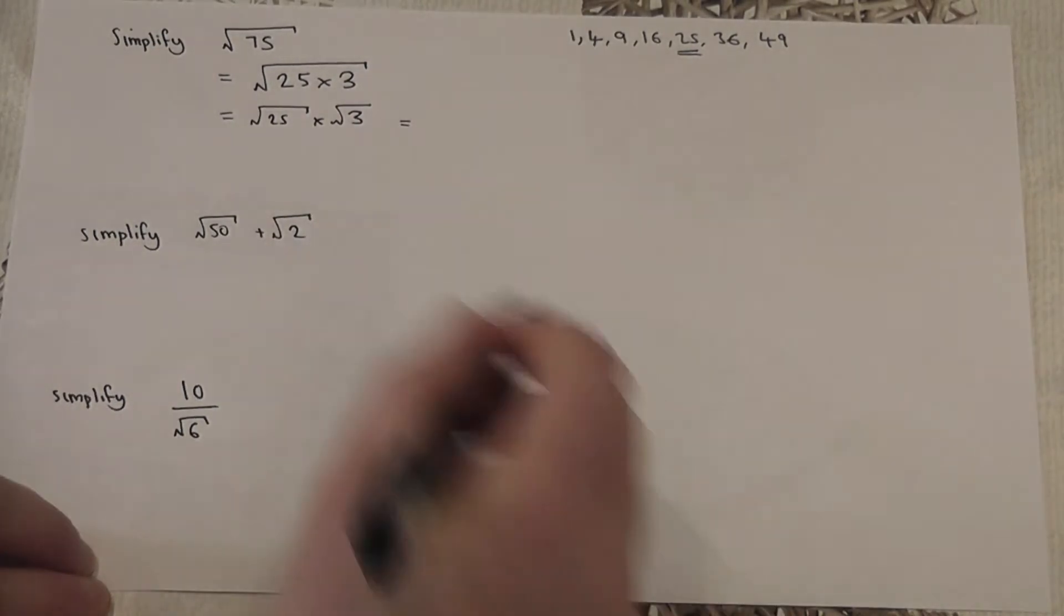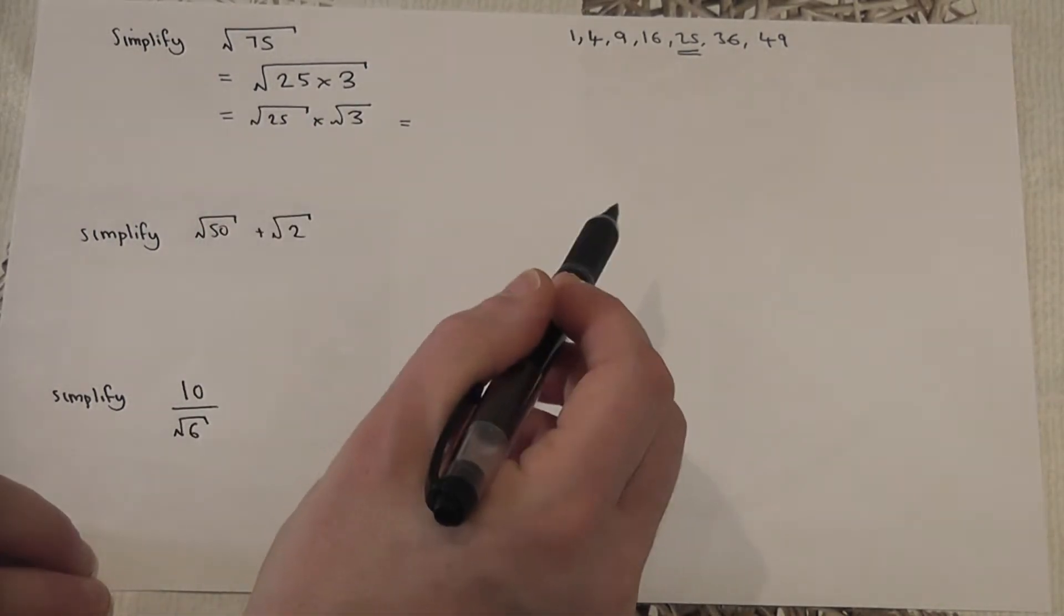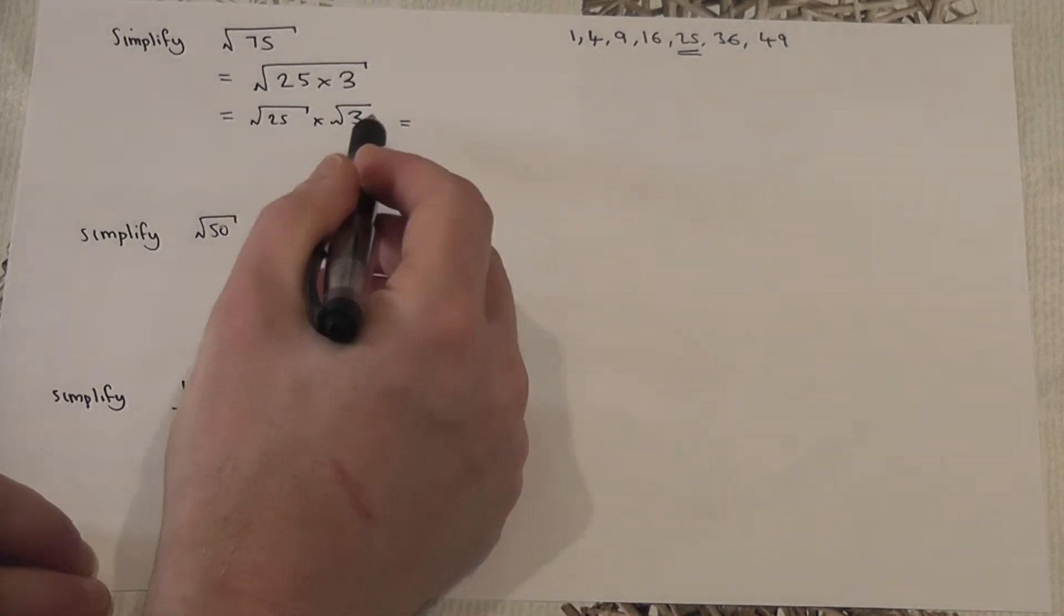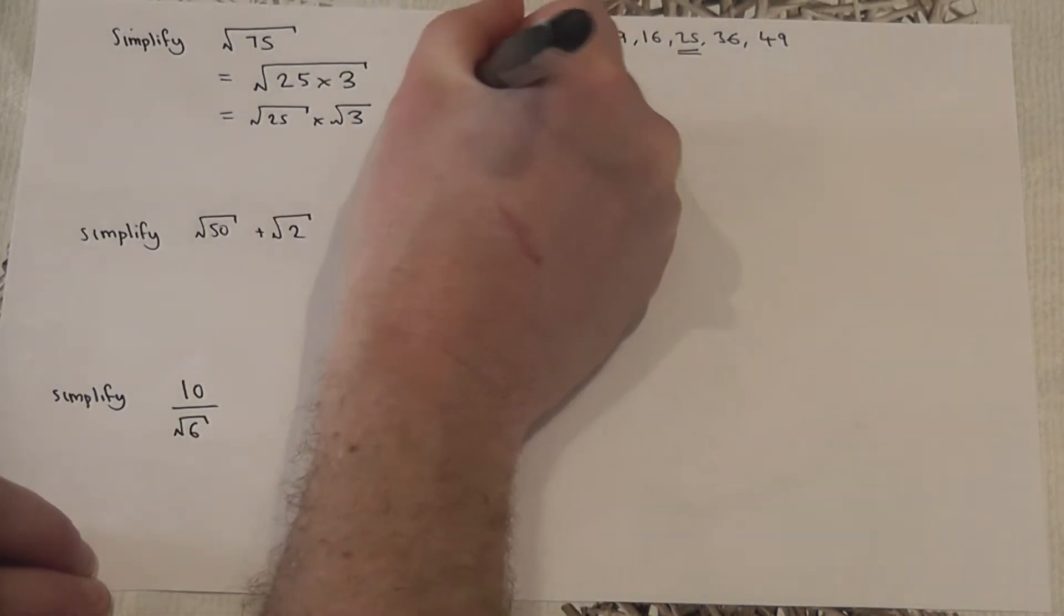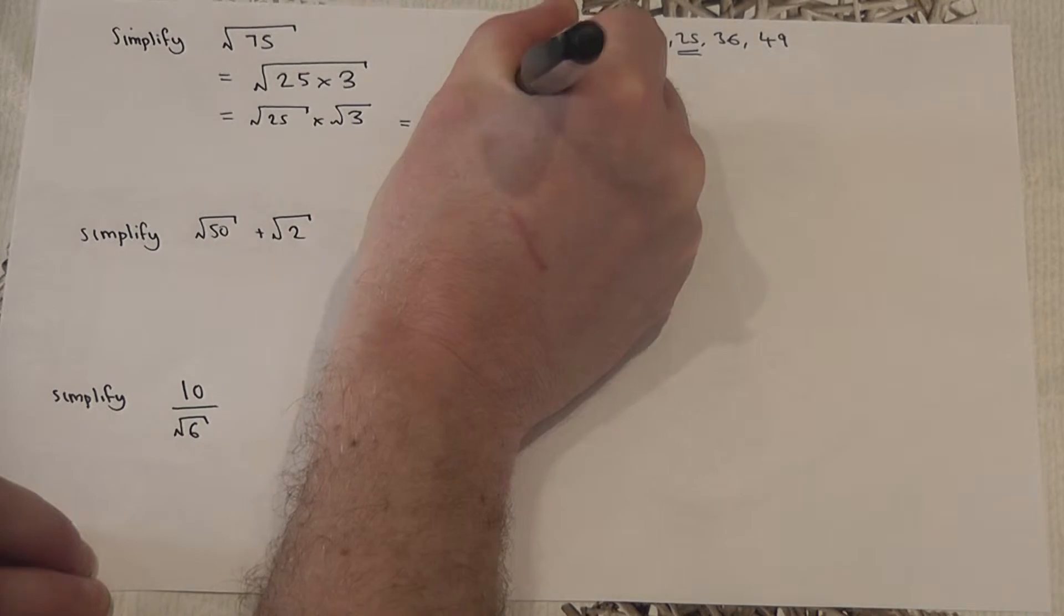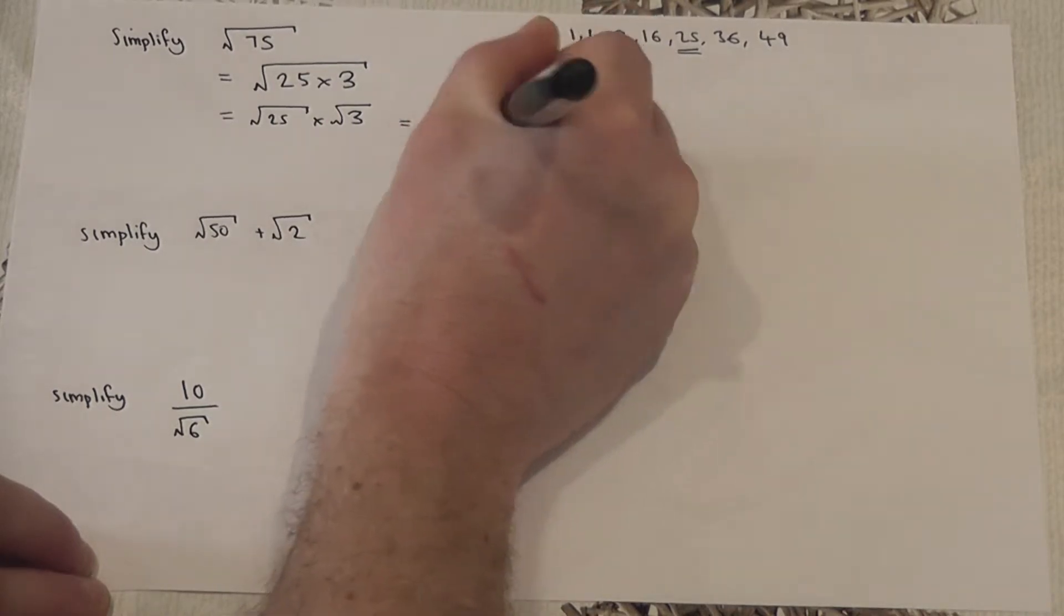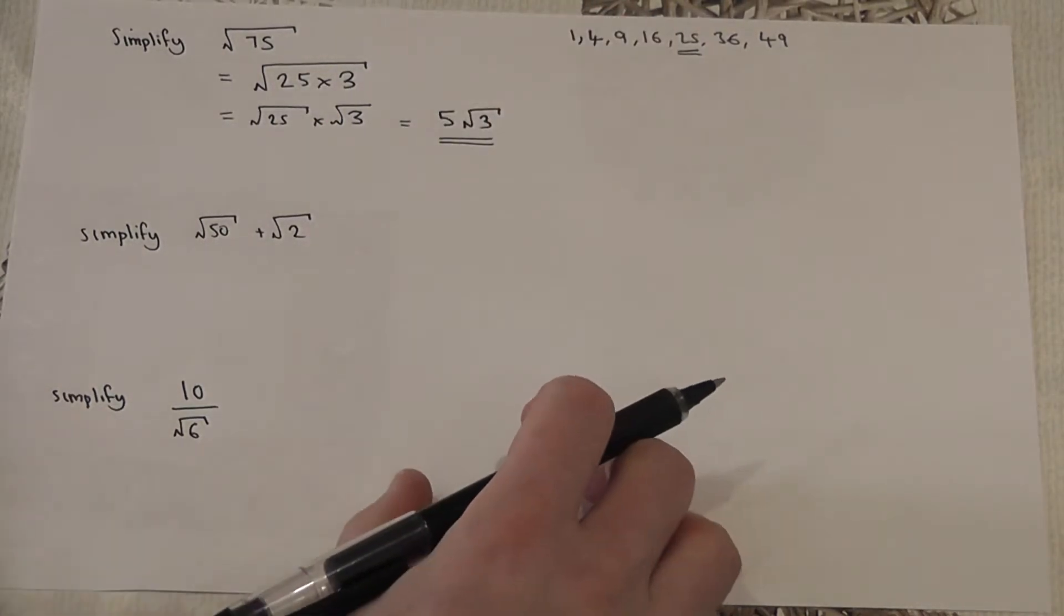However, I can actually work out what the square root of 25 is—it's five. This is a decimal, so the answer is five lots of root three, and this is a simplified surd.